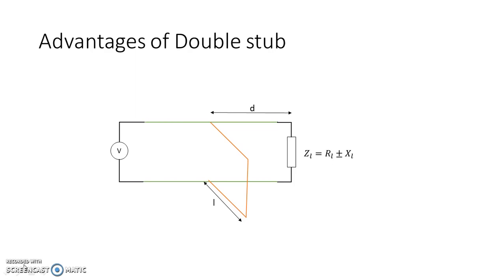Double stub matching network has advantages over single stub matching network in basically two ways. The diagram shows a single stub matching network in which the load has been matched with the source impedance by using two design parameters: D, which is the distance from the load, and L, which is the length of the stub. If the load is variable or if it changes, then both D and L change.